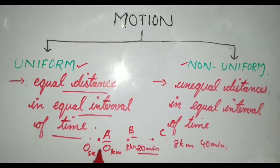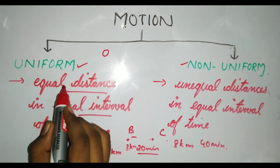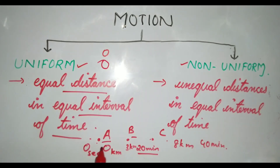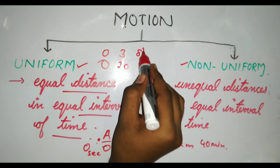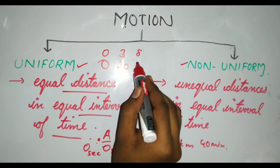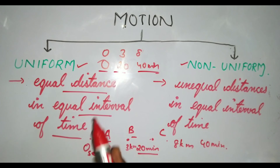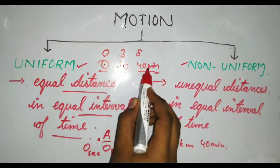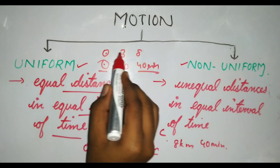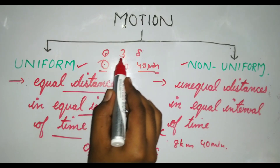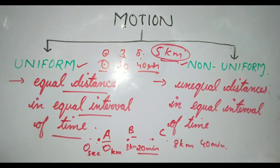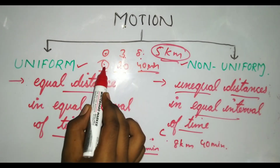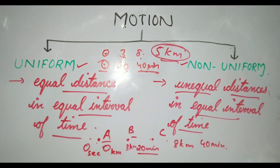Now observe: from position A to B, distance is three kilometers, time taken is 20 minutes. From A to C, distance is eight kilometers, time is 40 minutes. The time remains in equal intervals — 20 minutes from A to B, and 20 minutes from B to C. But the distance is different: from A to B it's three kilometers, and from B to C it's five kilometers — eight minus three. So he is covering unequal distances in equal interval of time.